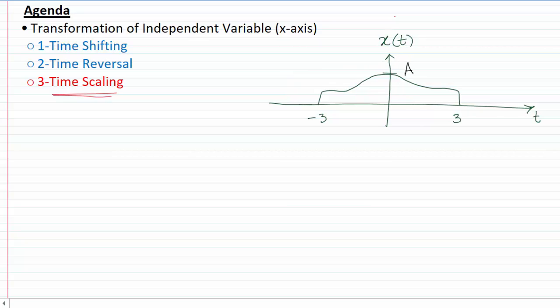Here I have a signal x which starts from t equal to minus 3 and ends at t equal to 3 and has a maximum amplitude of a. For this example, I'm asked to plot x of 2t. There are many ways to plot it; let's just use the way that we discussed when we were discussing the time shifting.